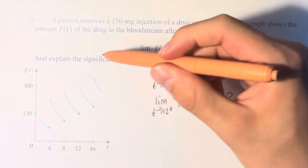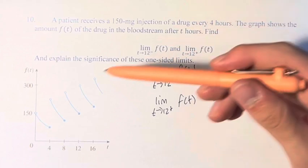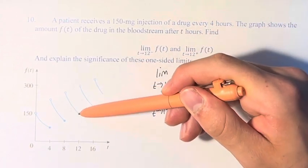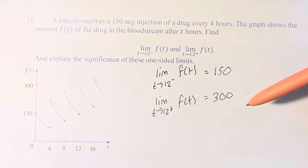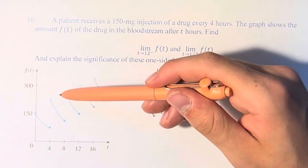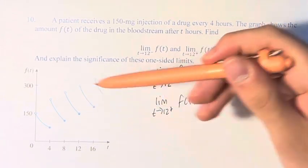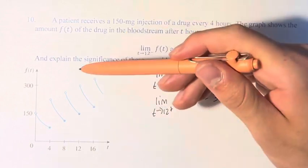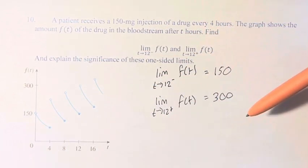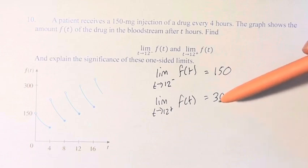What is the significance of this one-sided limit? It looks like this function suddenly jumps up 150. As we're approaching 12 from the left, it's way down at 150. And then simultaneously, at the exact same time, just after the 12-hour mark (since time is measured in hours), it's up at 300.